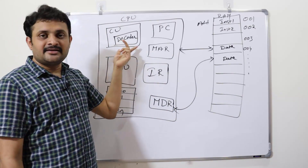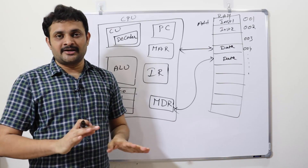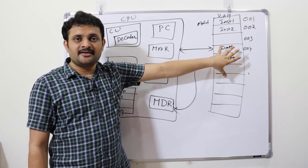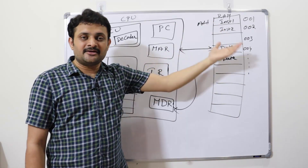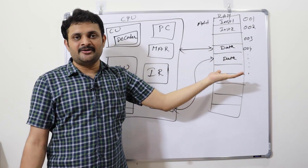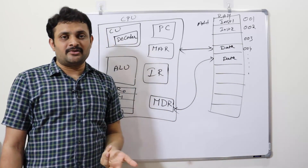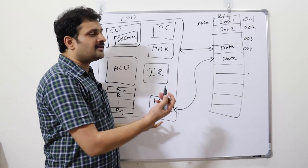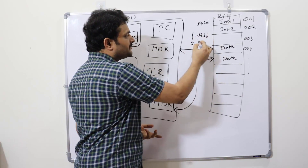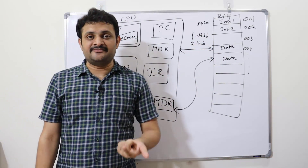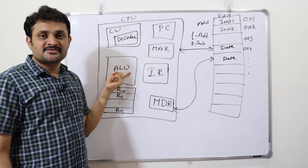The decoder will decode the instruction. Instructions are stored in binary form in memory, so when received by the decoder, it decodes them as an opcode. For example, code '1' might mean perform addition, code '2' might mean perform subtraction. The decoder takes help from the instruction set to determine the appropriate operation to execute.